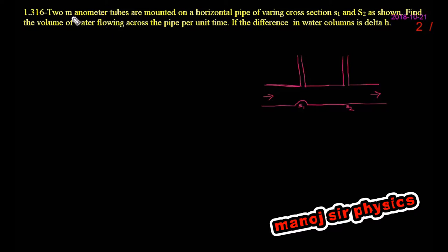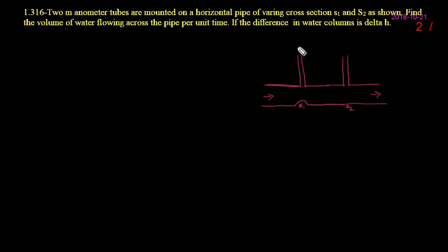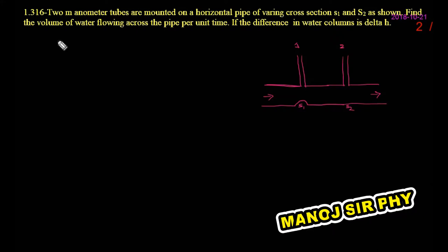Now two horizontal manometer tubes, this is first one, first tube and this is second tube. Now let us see how you calculate the water flowing per unit time, water volume. Find the volume of water flowing per unit time, it means this is the rate of flow.